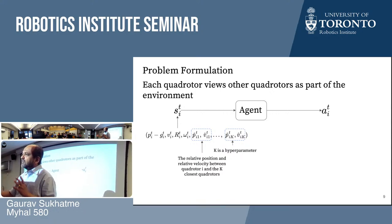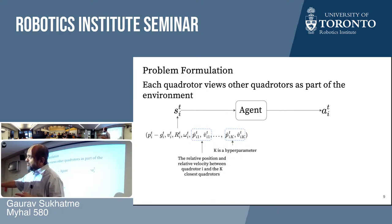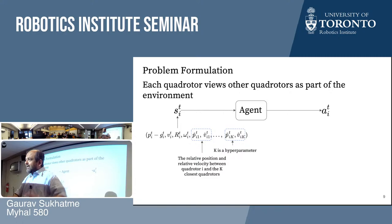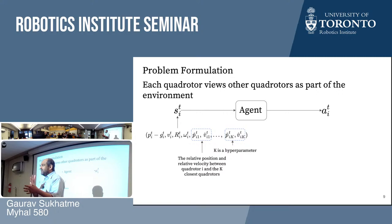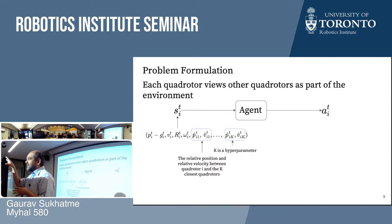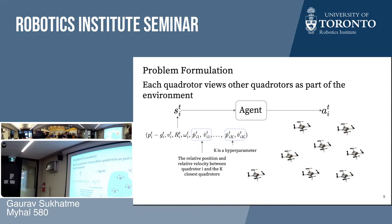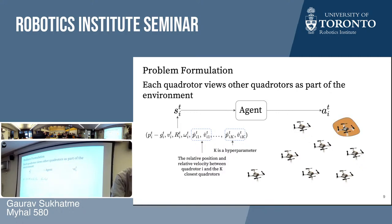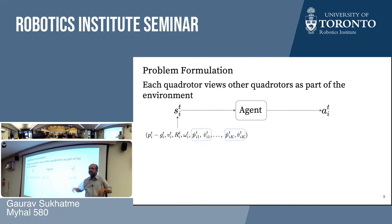Our claims to decentralization critically depend on k being substantially smaller than n, the total number of vehicles. If k is roughly n, this is not truly decentralized. So you should ask at the end whether I showed results where k is substantially smaller than n. The output on each vehicle is four numbers — four thrusts for four propellers.